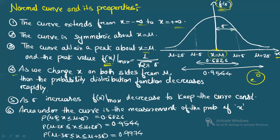When the value of σ increases, the peak value f_max decreases. This happens so that the area under the curve remains constant. The area under the curve gives the measurement of the probability of the random variable x.